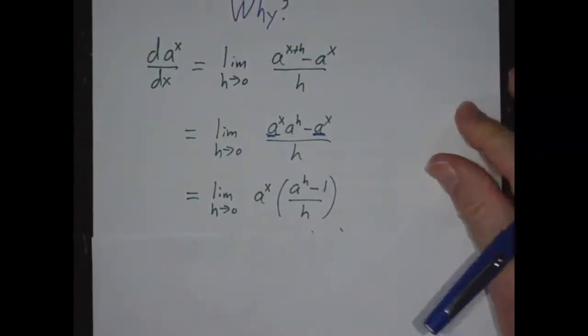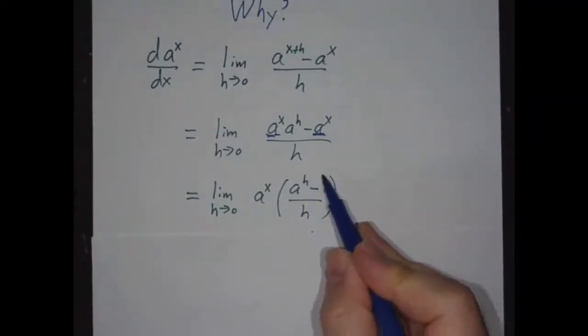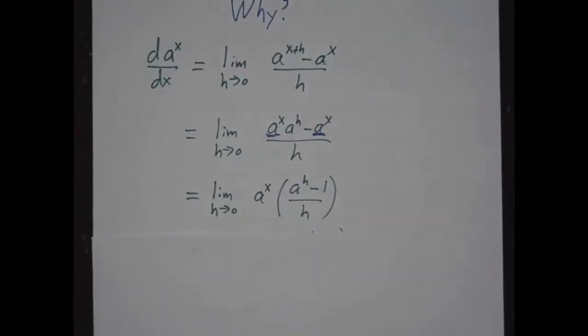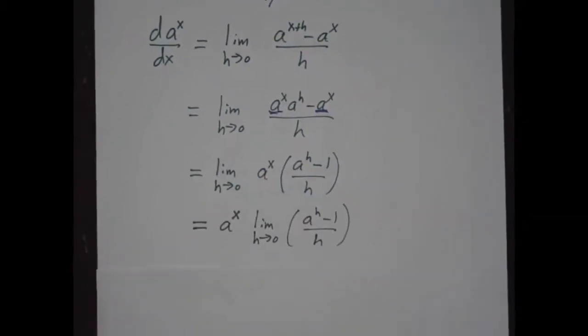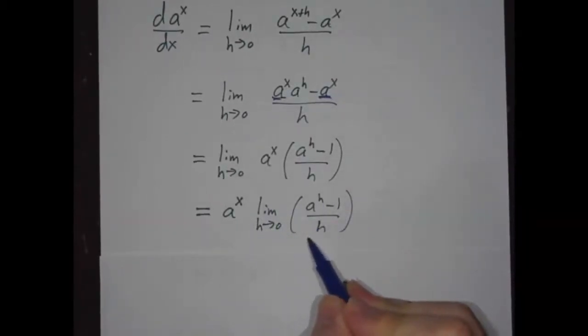And now the limit as h goes to 0, I mean, you can plug in h equals 0.01 or 0.001 or 0.000001, and this is some number. And the a to the x just comes along for the ride. So it's a to the x times this funny limit that depends only on a and h. Doesn't depend on x.